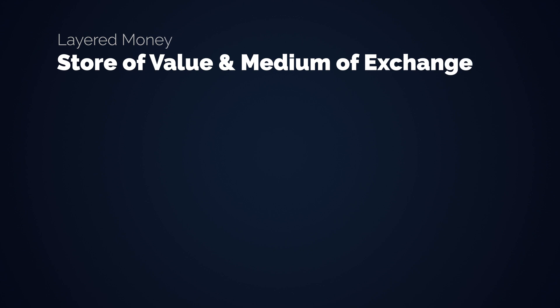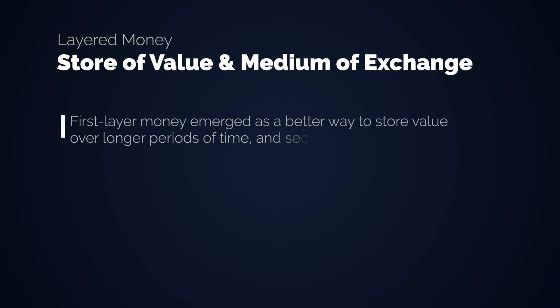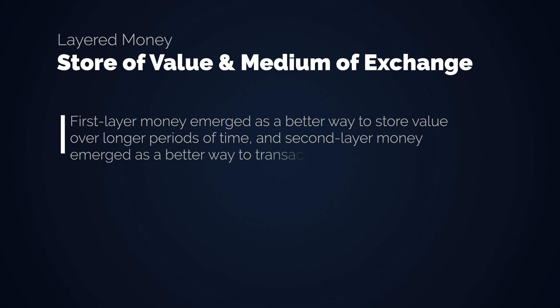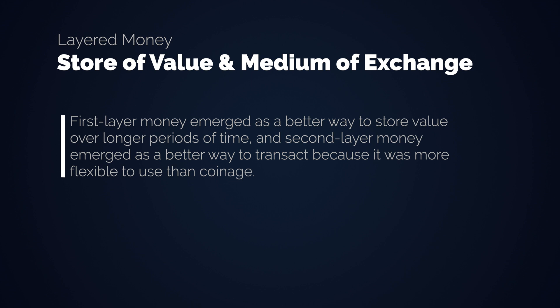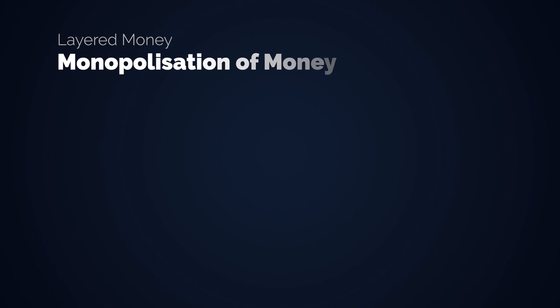What happened is that first layer money emerged as a better way to store value over longer periods of time, and second layer money emerged as a better way to transact, because it was more flexible to use than coinage. However, there were always actors that tried — and sometimes successfully — to monopolize the issuance of second layer money by owning all the first layer money.